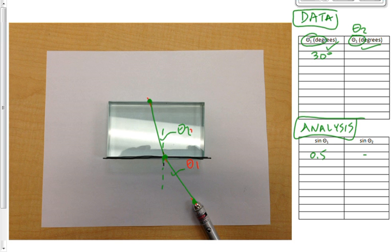Notice here the units for theta 1 are degrees. What are the units for sine theta 1? There are no units for the trigonometric function. For sine, cosine, tan, it's just a number, so you're not going to include units. Once you've got a table for sine theta 1 and sine theta 2, what do you think you're going to do with that?